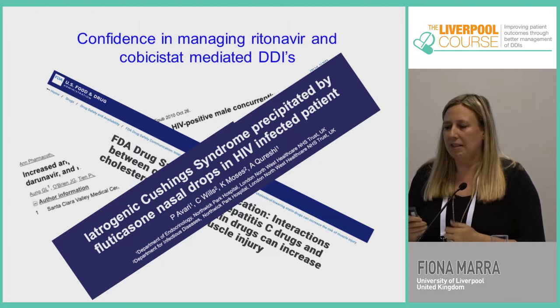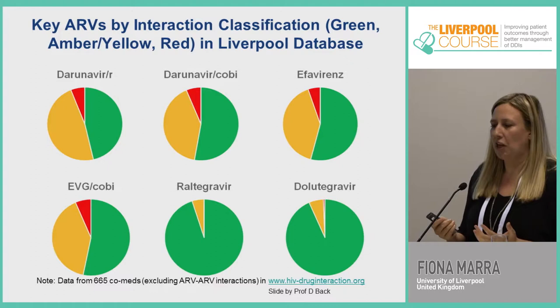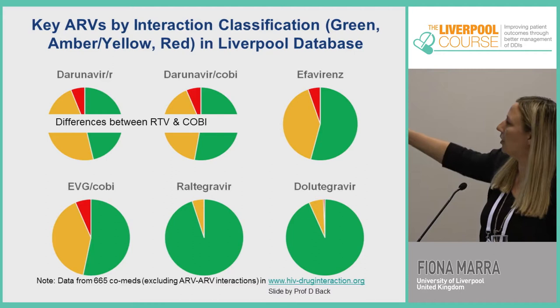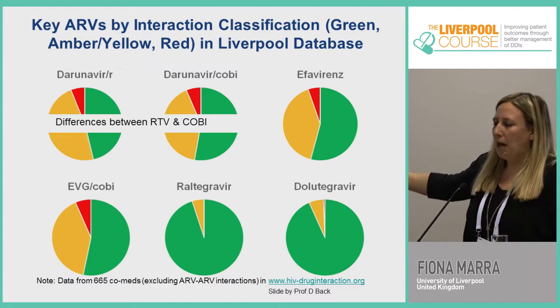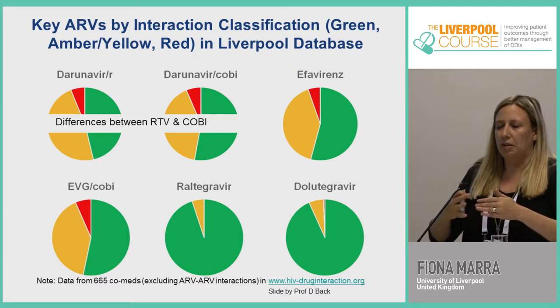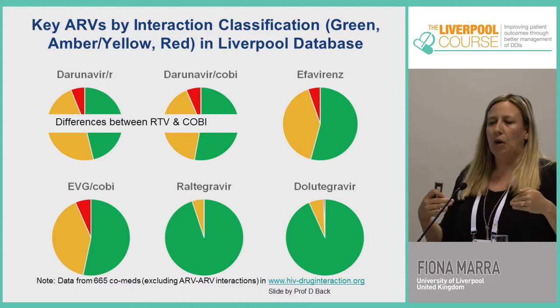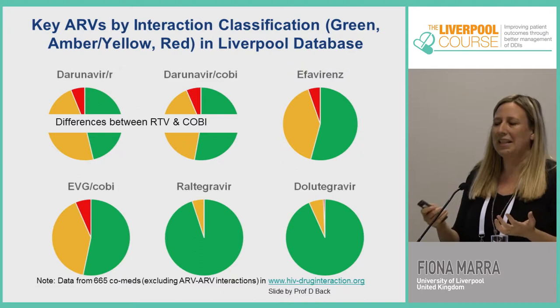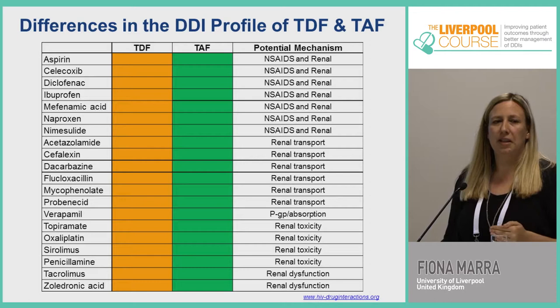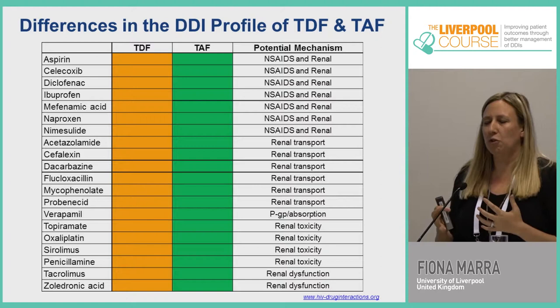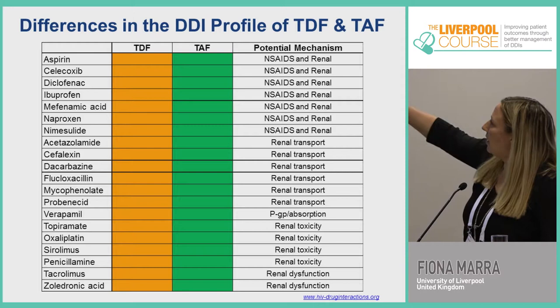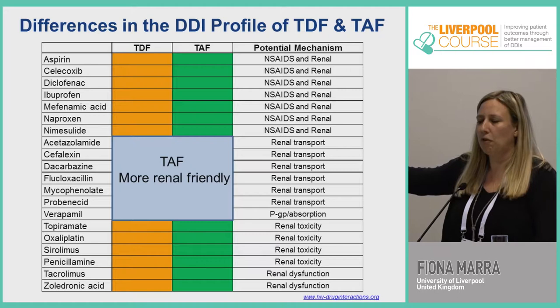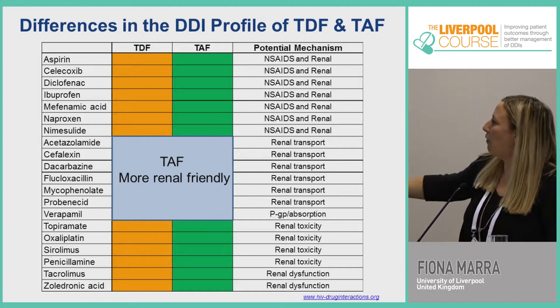Looking at interaction classes: boosted drugs at the top show more amber and red interactions, with much less for integrase inhibitors. There's a clear move away from boosted drugs towards integrase inhibitors for an easier life regarding drug interactions. Regarding TDF versus TAF: TAF has fewer renal issues. The drugs that are amber for tenofovir TDF are amber because they are renally excreted — with TAF, those become green interactions.